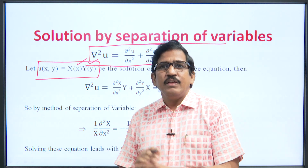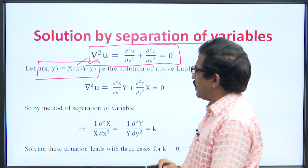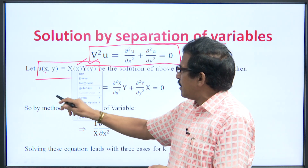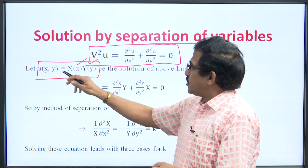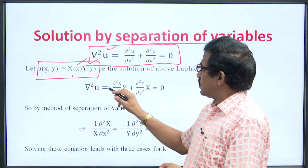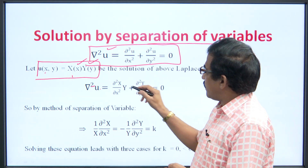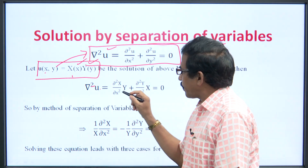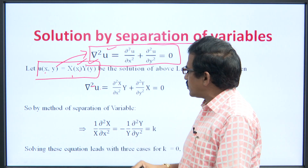In the method of separation of variables, we separate the two variables x and y. Let us suppose u equals small x, which is a function of x, times small y, which is a function of y. Now substitute this u into the differential equation del²u = del²X/del x² plus del²Y/del y², where X is only a function of x and Y is only a function of y.